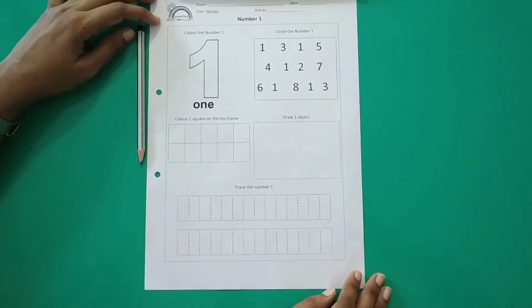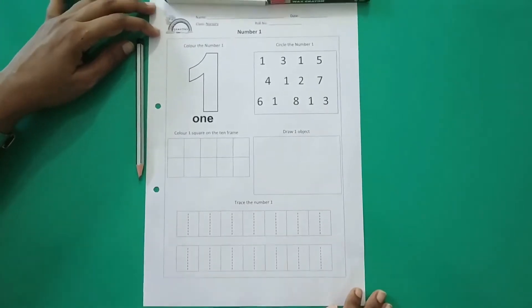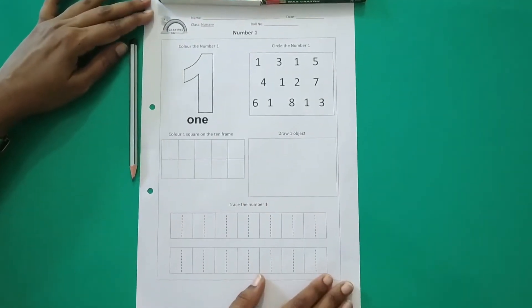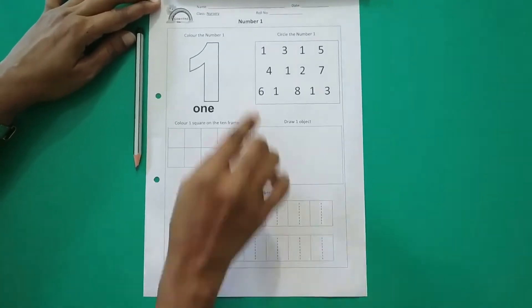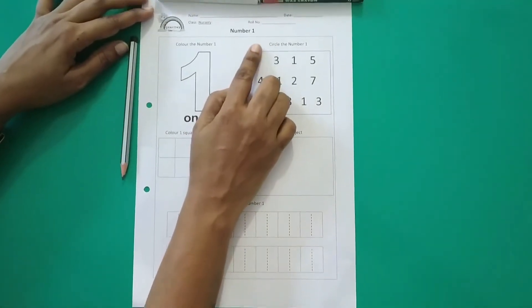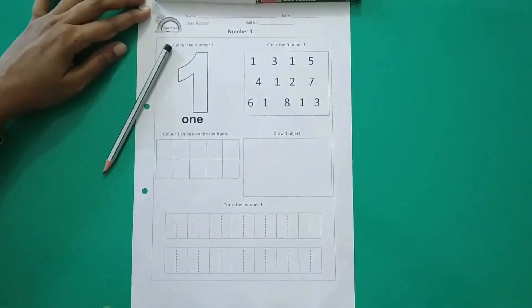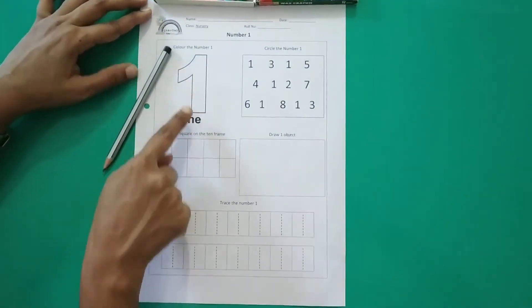Good morning everyone. Now we will start with our worksheet. Okay children, now let's start with our worksheet for today. Today's worksheet is number 1. Which number is this? This is number 1. Number 1.